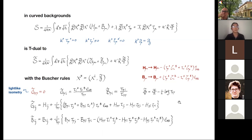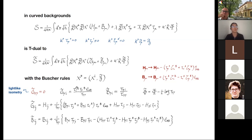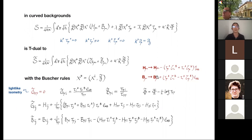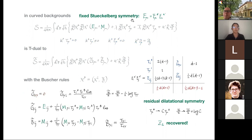Looking at this set of Buscher rules: on the right-hand side we have string Newton-Cartan data with more components than the relativistic tilde-data, because we haven't fixed the Stückelberg symmetries. At this point you can use this as a strong check — the Buscher rules are exactly invariant under the Stückelberg transformations. To match the degrees of freedom on both sides, let's fix the Stückelberg symmetries.